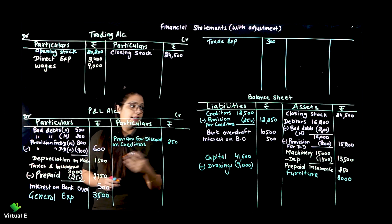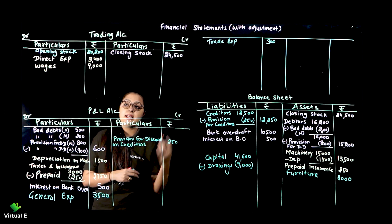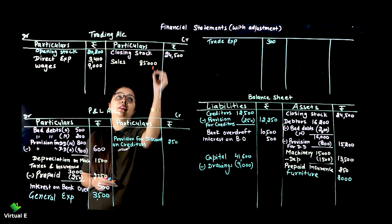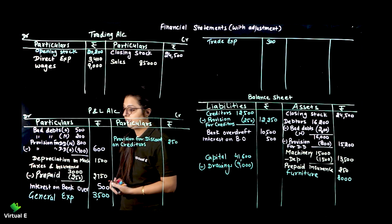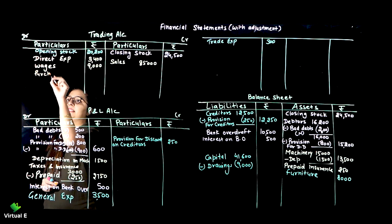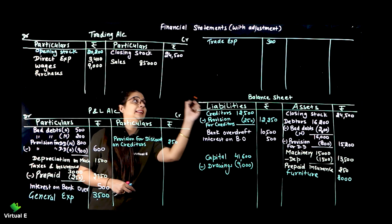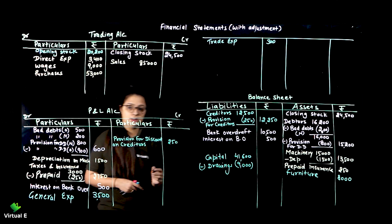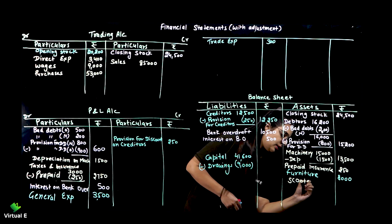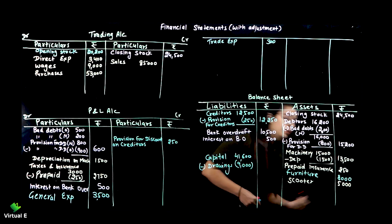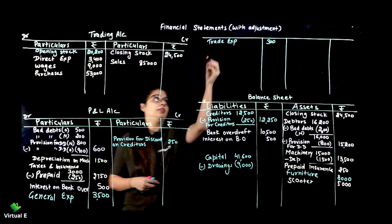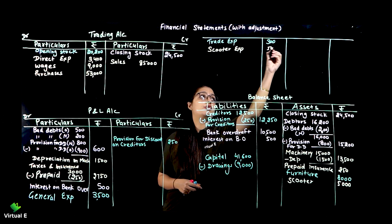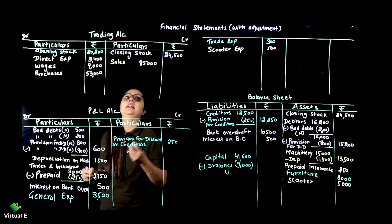Debtors already transferred. Sales go to trading on the credit side because money comes from sales: 85,000. No return, so directly entered. Purchases - no return, so directly entered: 53,000. Scooter is an asset - remember, scooter is an asset. Any vehicle is an asset. Scooter expense 500 goes to profit and loss.